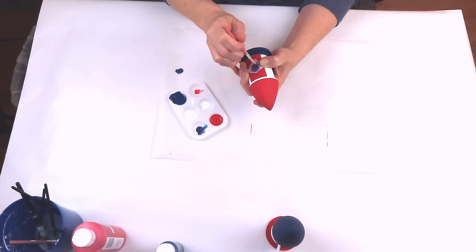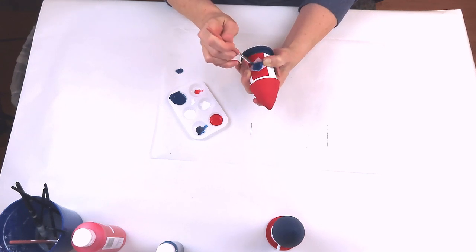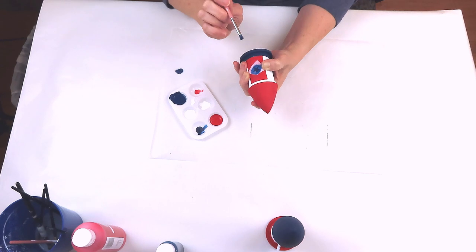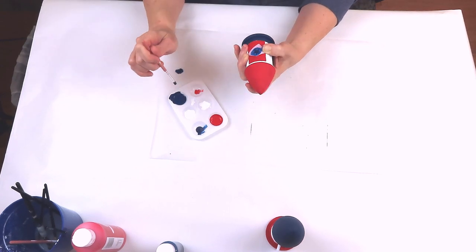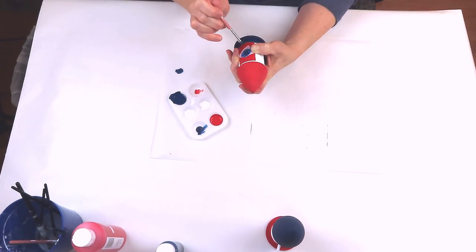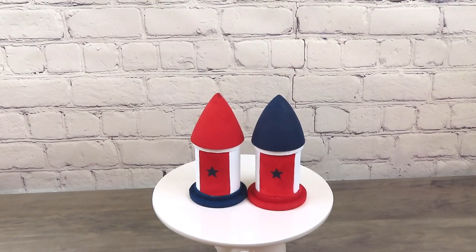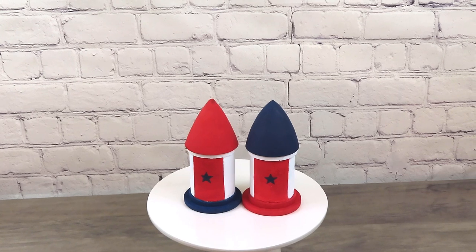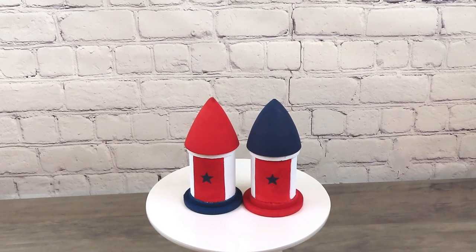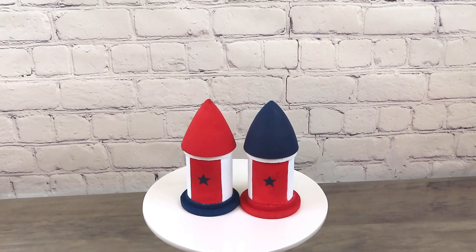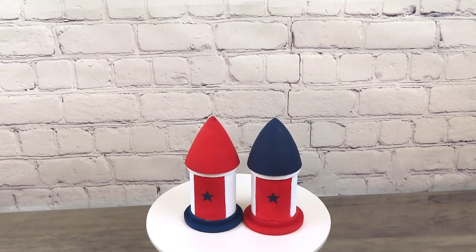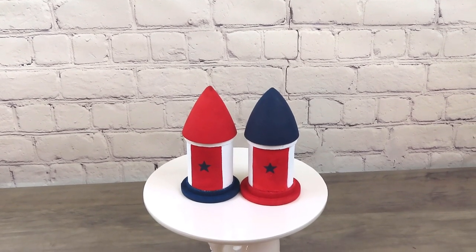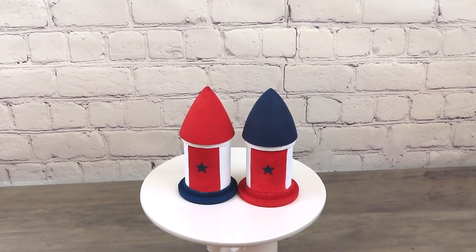And I just used another one of the stars for my stencil and just added a blue star to the center of each of the red stripes. This would be such a fun project to do with your kids. And I think they are just absolutely adorable, and it really doesn't take any time. The longest part is just waiting for your paint to dry. So tell me, did I succeed in making them look like little rockets? I can't wait for you to see them on the tiered tray at the end. I just love them.